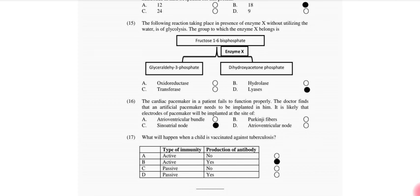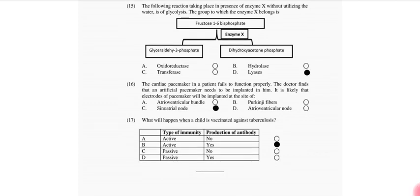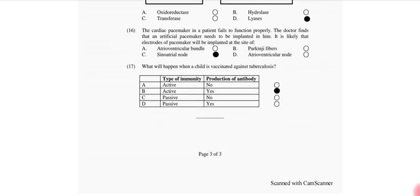What will happen when a child is vaccinated against tuberculosis? The type of immunity which may be active and production of antibodies are also active. So that's all about today and I hope that the video will be good. Please share the video, please like the channel, please subscribe. Thank you so much for watching the video. We will see you in the next video. Allah Hafiz.